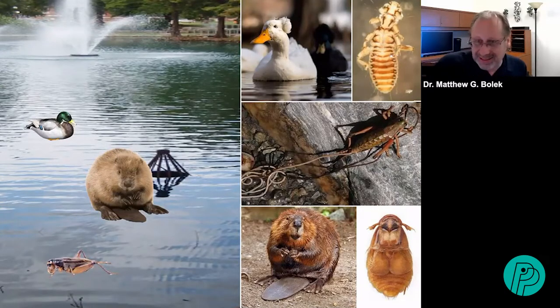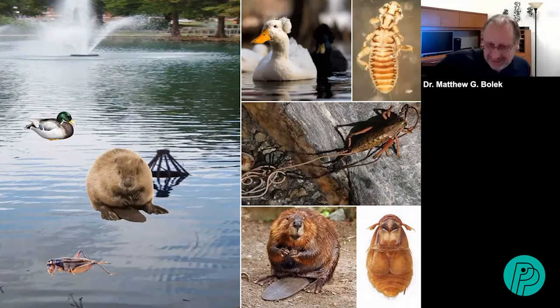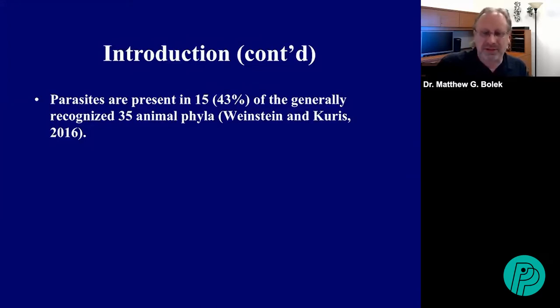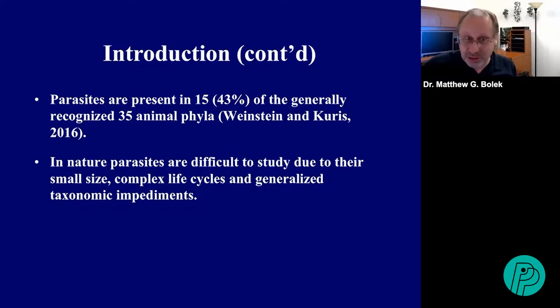For example, on the ducks you can see lice that swim through the feathers and feed on feather parts. The cricket shown here is actually releasing a horse hair worm into the water, which then completes its life cycle as a free-living species. The beaver has amazing little beetle parasites that live in its fur. There are hundreds of different free-living animals that have many different types of parasites.